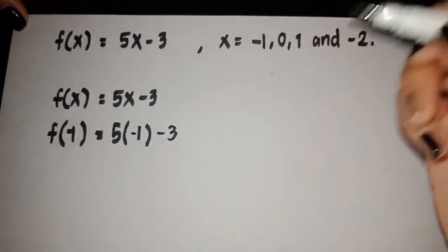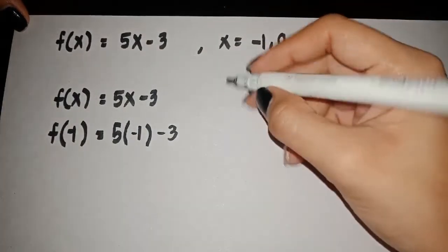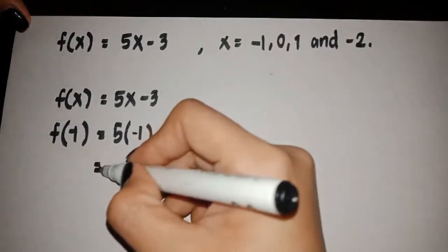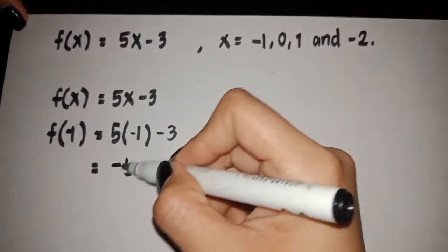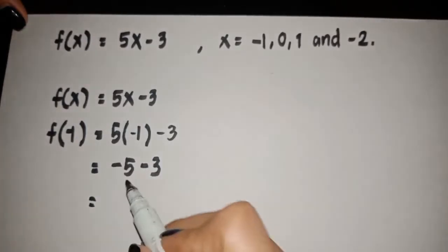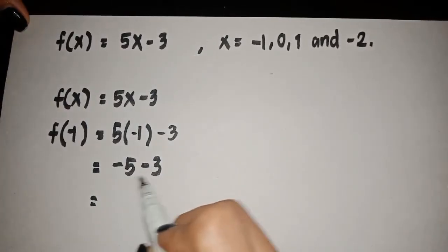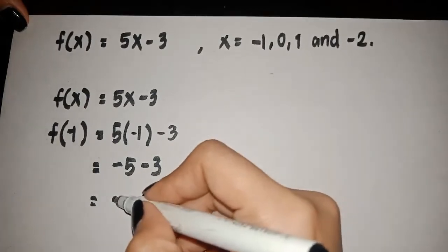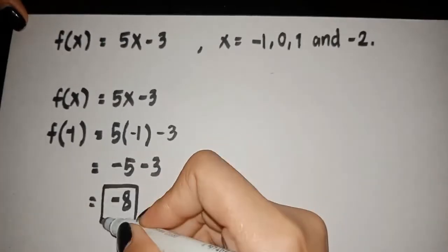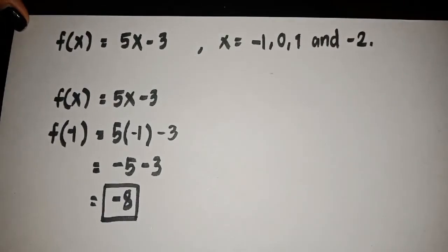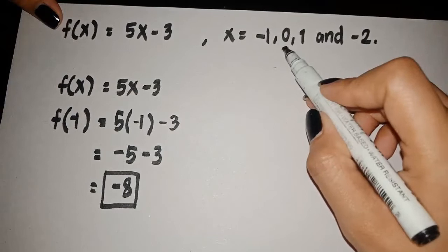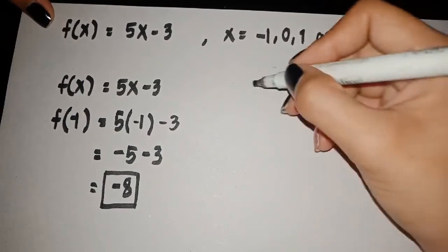We have 5 times −1 minus 3. In evaluating functions, please make sure to use the PEMDAS rule, wherein you have to multiply first before you subtract. So we have −5 minus 3. Since they are like signs, we add and copy the common sign, giving us a final answer of −8.